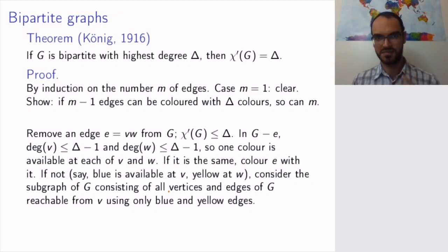So now we do something that's a bit complicated, but it's a nice trick. You look at the subgraph of G that consists of all the vertices and edges that are reachable from v using only blue and yellow edges. We have here v, and we have here w. You have all sorts of edges with all sorts of colors that attach to v and w. Now you start at v, and you allow yourself only to walk along yellow and blue edges in whichever way you want.